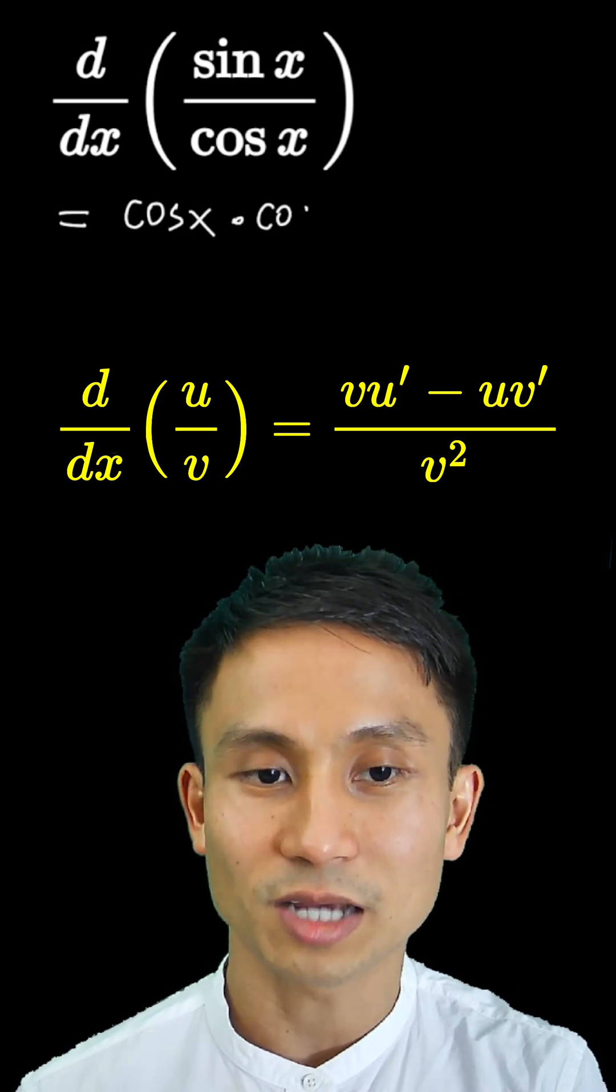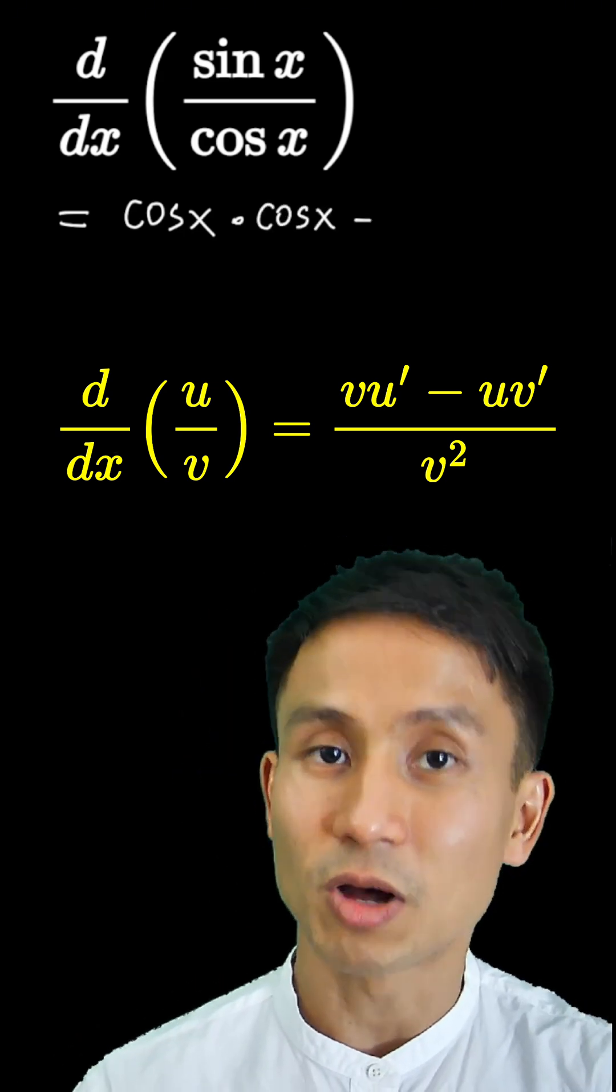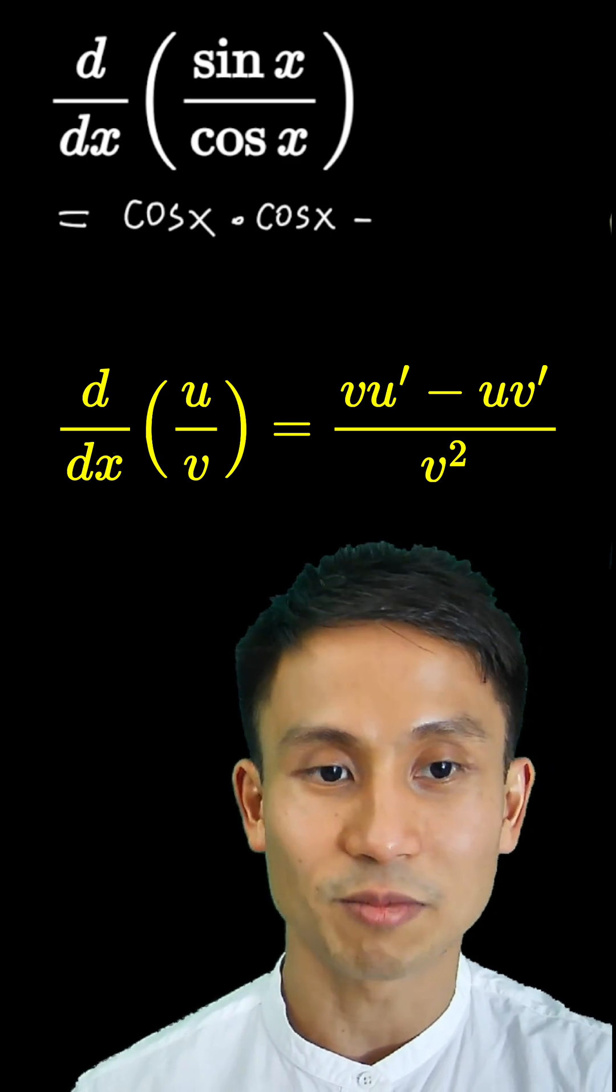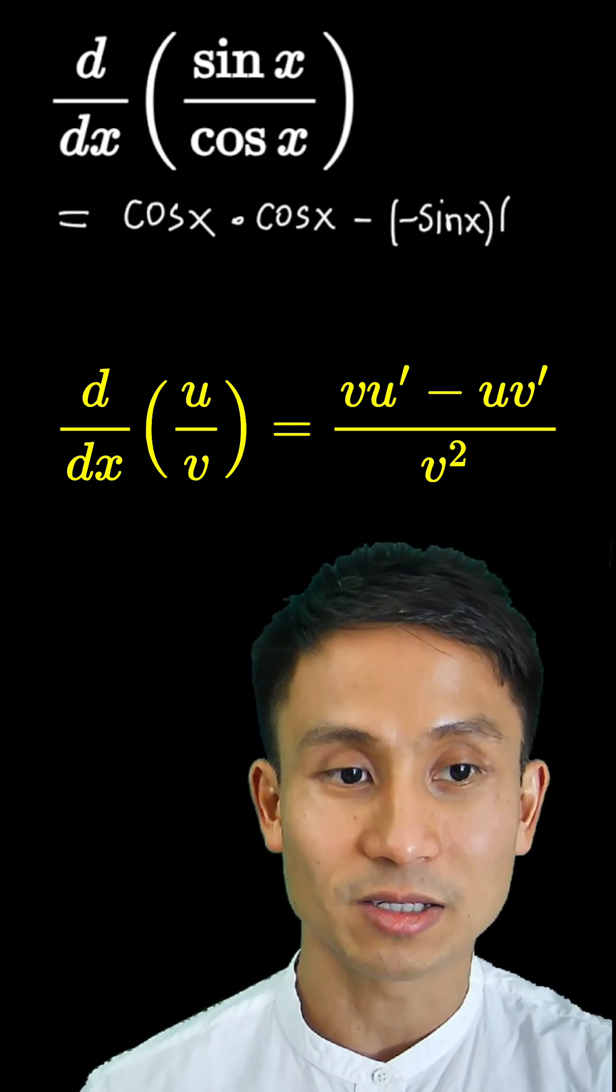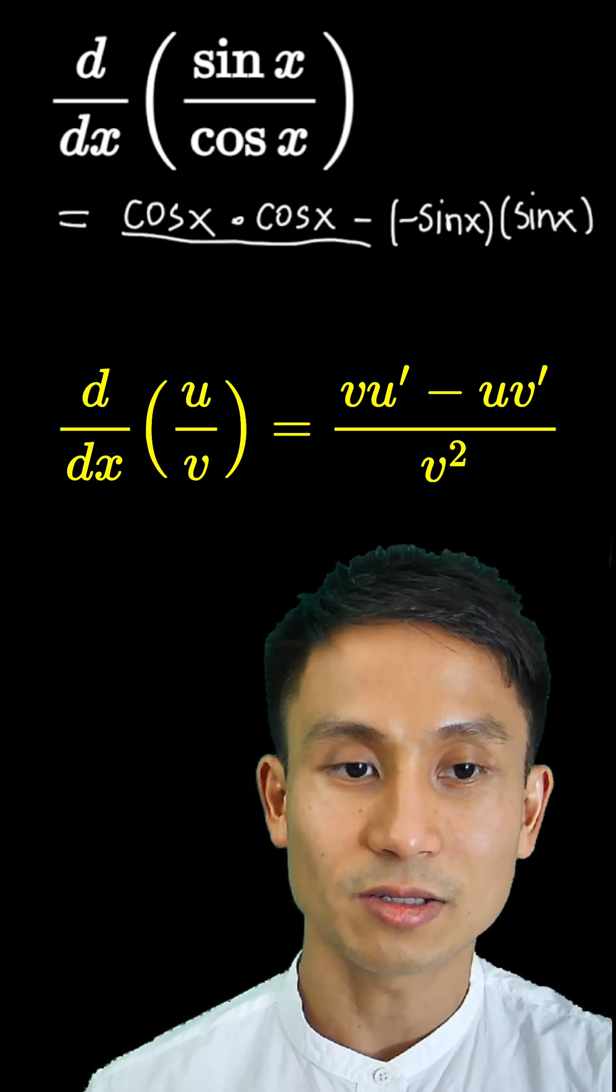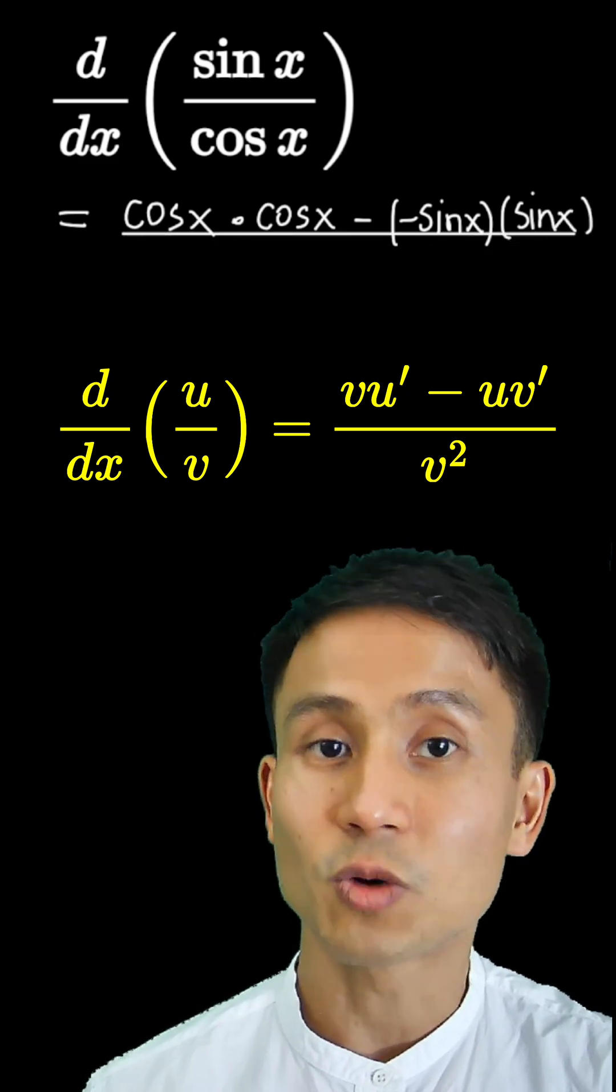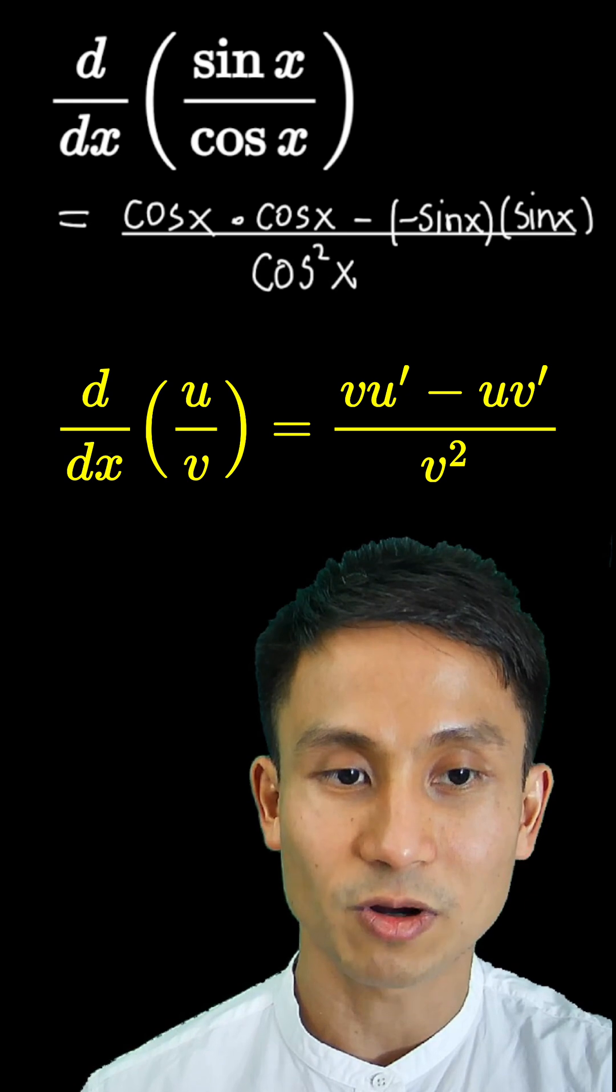We get cos x, minus differentiating the bottom part which is cos x. Differentiating cos we get a minus sign, so I put a minus sign here in brackets, and then keeping the top part the same we have sine x there. And this is all divided by the square of the bottom part, which gives us cos squared x.